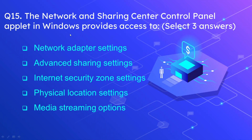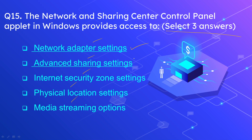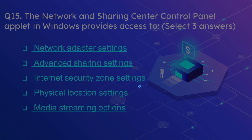Question number 15: The Network and Sharing Center control panel applet in Windows provides access to — select three answers. The options are network adapter settings, advanced sharing settings, internet security zone settings, physical location settings, and media streaming options. The correct answers are network adapter settings, advanced sharing settings, and media streaming options.